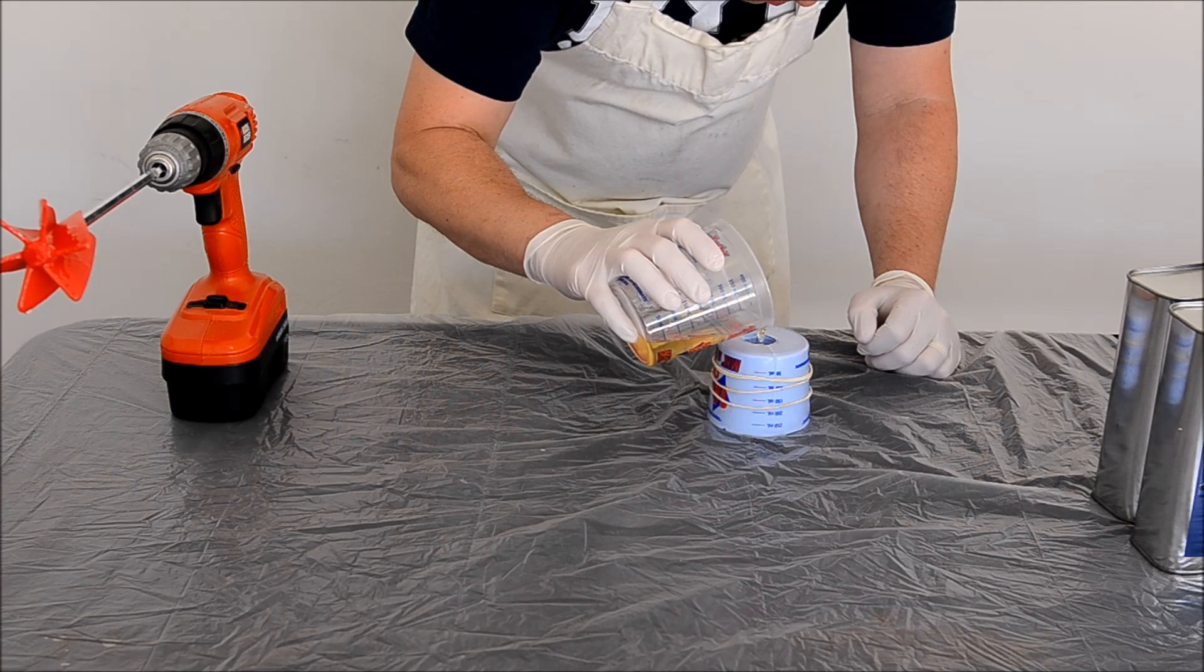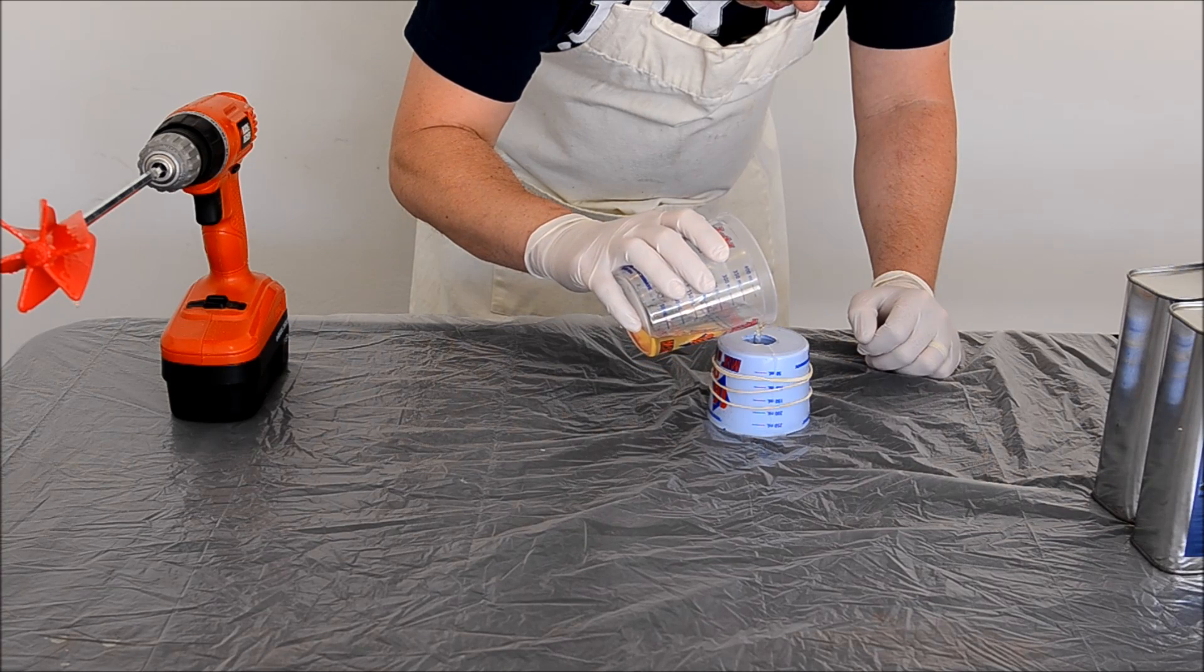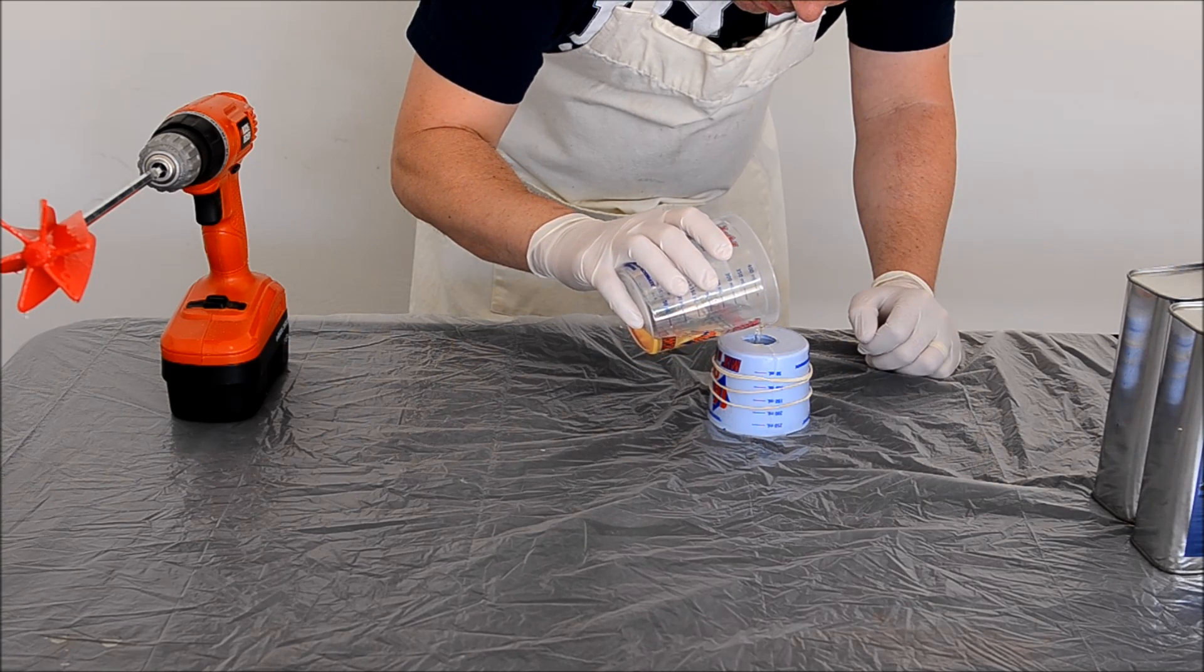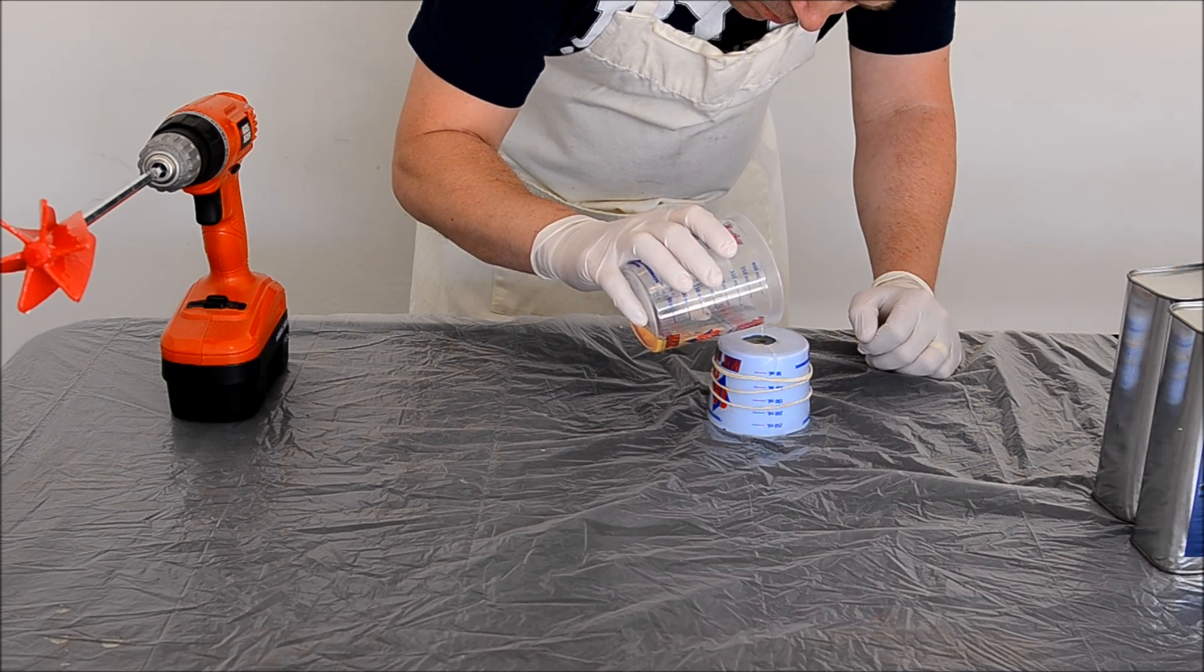Pour the polyurethane slowly into the mold to allow the air bubbles to work themselves up to the top. Within a minute or two, you will see the polyurethane turn to white as it gels.